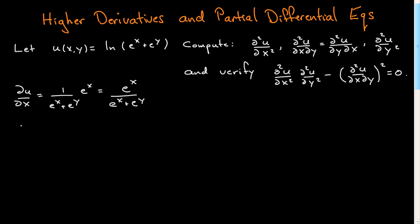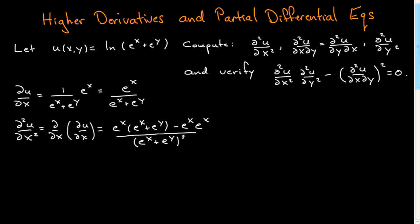Now I'll go ahead and compute the second x derivative. So to be clear, the first partial derivative with respect to x is what I just computed. I simply want to differentiate again with respect to x. This will be the quotient rule — if any of this is unclear, just pause the video and think about it. You'll see terms cancel, and the answer turns out to be e to the x times e to the y over the squared denominator. So I have this second derivative computed.